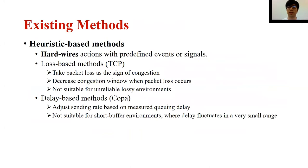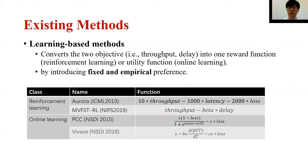Many methods have been proposed in recent years, which can be classified into heuristic-based or learning-based methods. Unfortunately, they cannot achieve consistent high performance in all environments, nor with diversified application requirements. Heuristic-based methods operate with predefined events or signals — for example, loss-based methods such as CUBIC take packet loss as a sign of congestion, which is not suitable for unreliable lossy scenarios. Delay-based methods such as COPA don't work well in short buffer scenarios where delay fluctuates in a very small range. Existing learning-based methods can only achieve high performance in specific types of network environments, because they convert the objectives into a single reward function with fixed and empirical preferences, which fundamentally limits their adaptiveness to different environments.